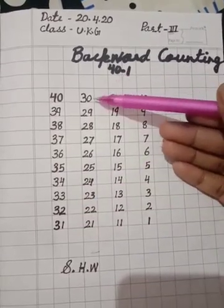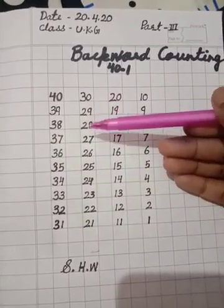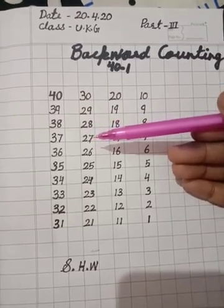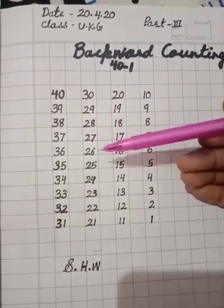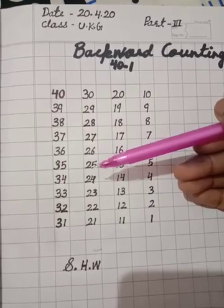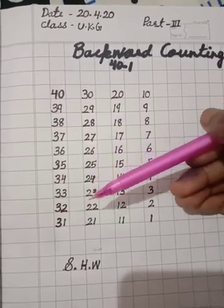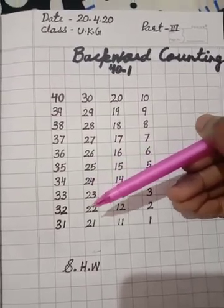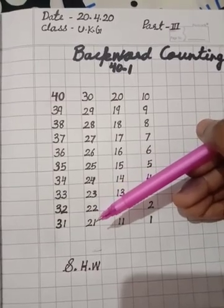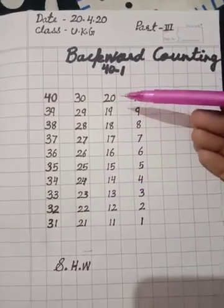30, 29, 28, 27, 26, 25, 24, 23, 22, 21, 20.